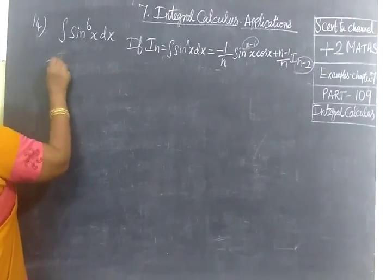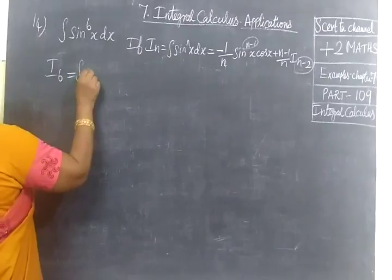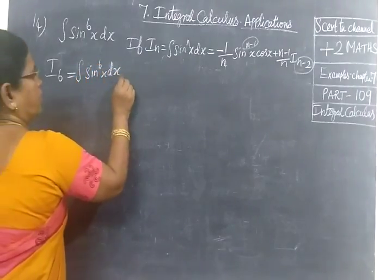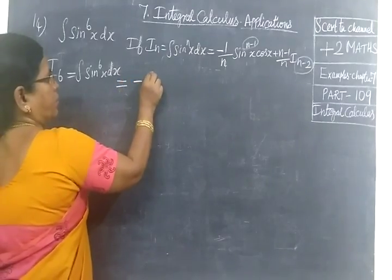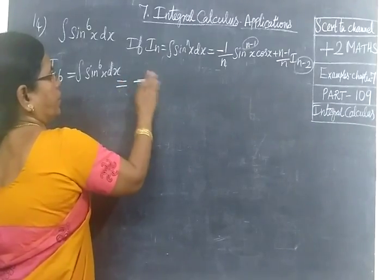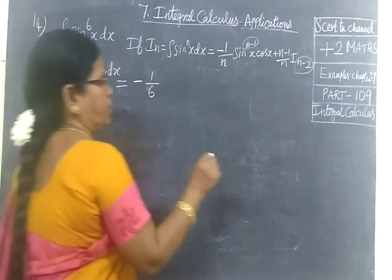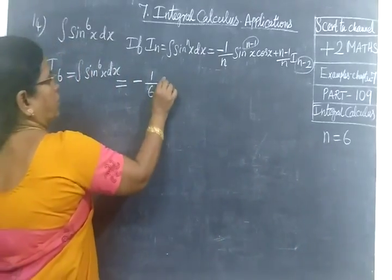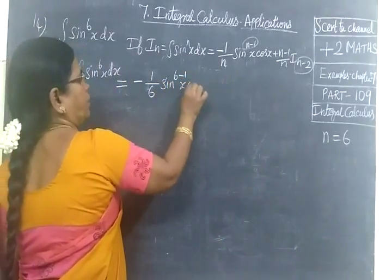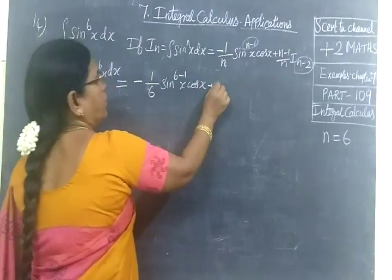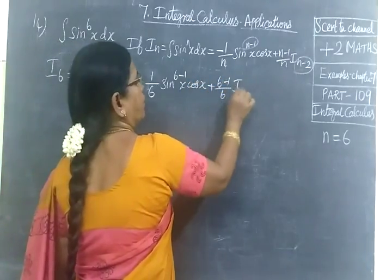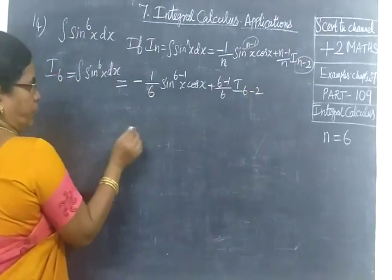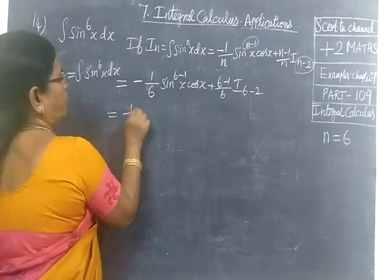So in this case I is equal to the integral of sin power 6x dx. The reduction formula is: I_n = -1/n · sin^(n-1)(x) · cos(x) + (n-1)/n · I_(n-2). For sin, note we write minus. First time n equals 6.